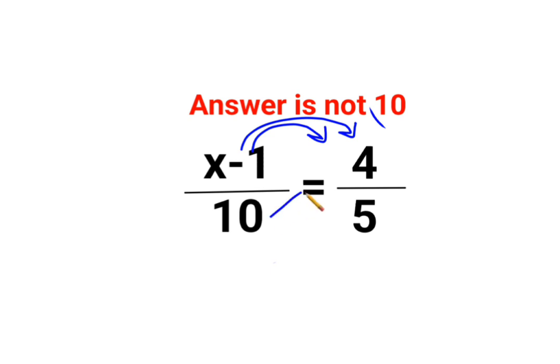You first need to shift your denominator on the other side. So basically you have x minus 1 equals to 4 multiplied by 10 upon 5. So this you have as x minus 1 equals to 40 upon 5.